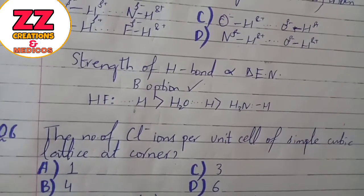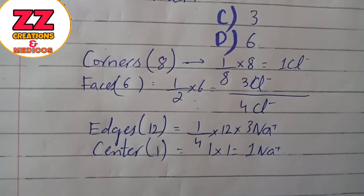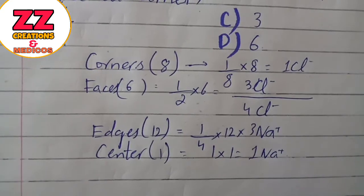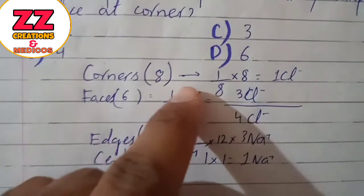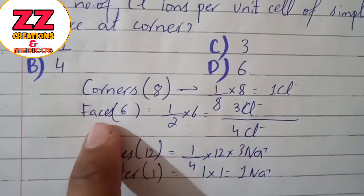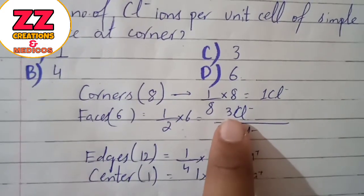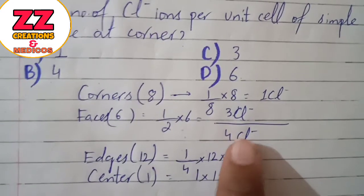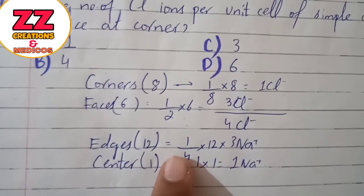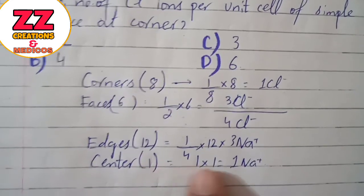Next question involves NaCl structure. You have to remember that NaCl is a face-centered cubic structure. At the corners there are 8 chlorides, each shared with 8 unit cells, giving 1/8 × 8 = 1 chloride from corners. On the faces, there are 6 chlorides shared with 2, giving 3 chlorides. Overall, 4 chlorides total. For sodium: 12 edge sodium ions shared with 4 give 3 Na⁺, plus 1 in the center, giving 4 Na⁺ total.